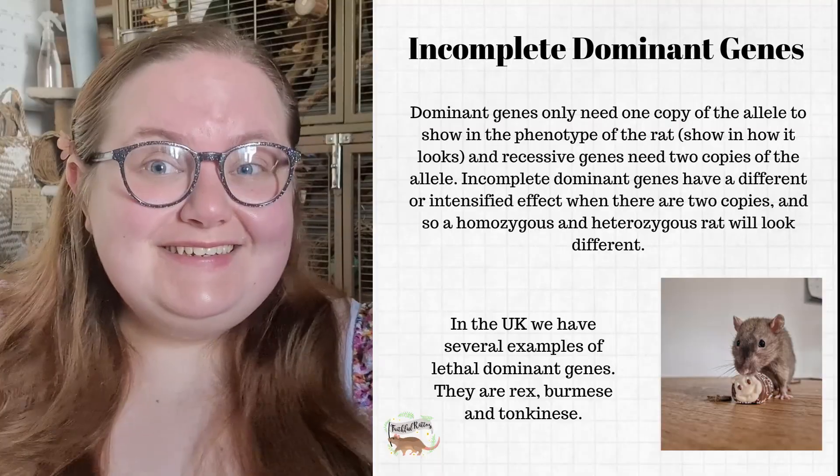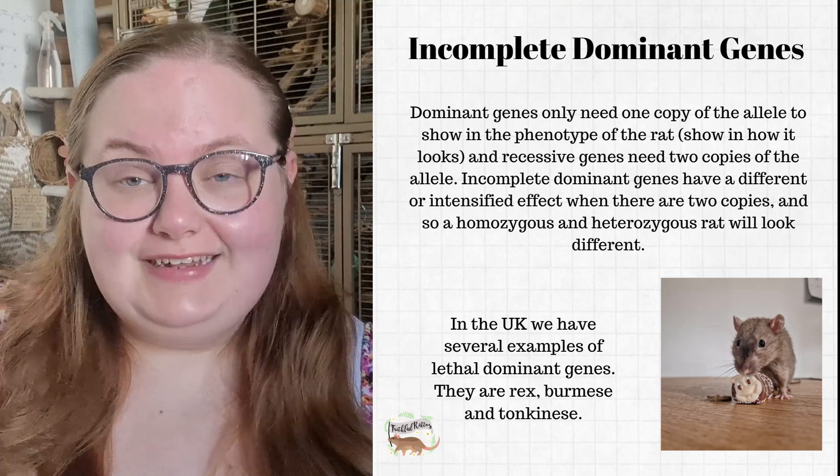Recessive needs to have two copies to show, and dominant only needs one. When I say 'to show,' I mean to be expressed in the phenotype — phenotype is just a fancy word for what the animal looks like. For example, agouti is a dominant gene; you only need one copy of it for it to express. You only need one copy to be an agouti-based rat. However, you can have two copies and that will also produce the same effect. This is where incomplete dominance comes in.